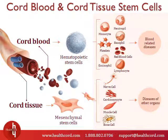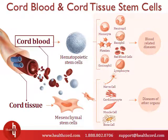Cord blood and cord tissue are sources of at least two different types of stem cells, which is why many expectant parents choose to preserve both cord blood and cord tissue. Cord blood is a source of hematopoietic stem cells. These cells produce different types of blood cells and immune cells in our bodies. They are useful for treating blood-related diseases and for replenishing the immune system.